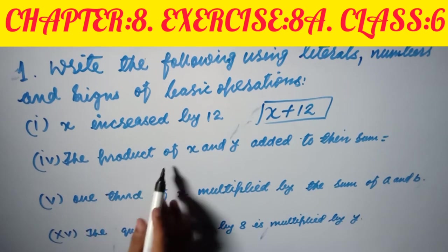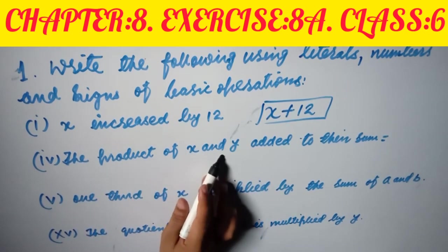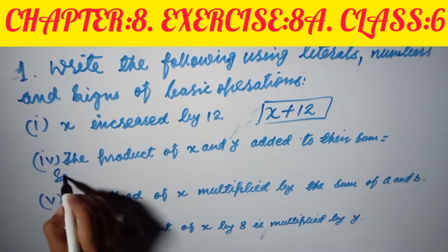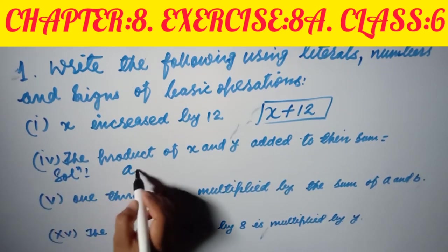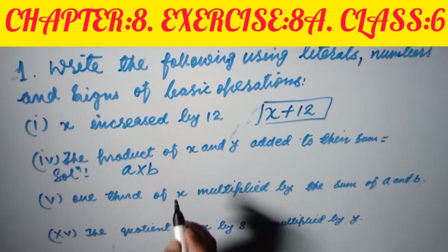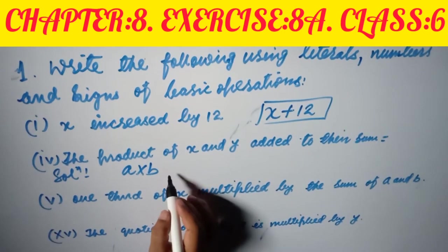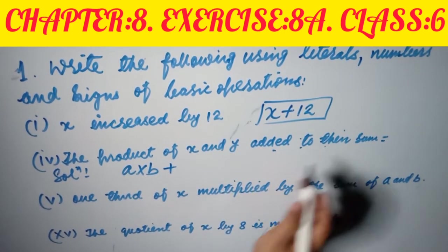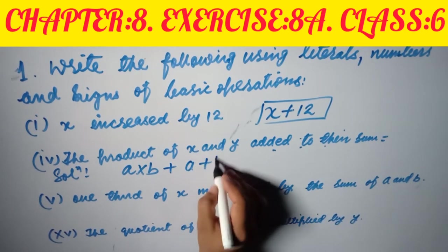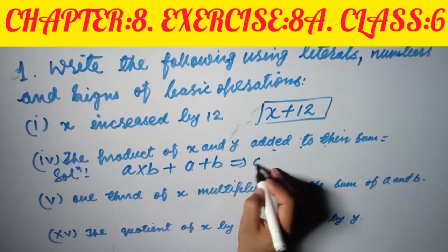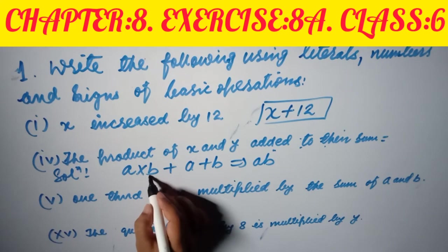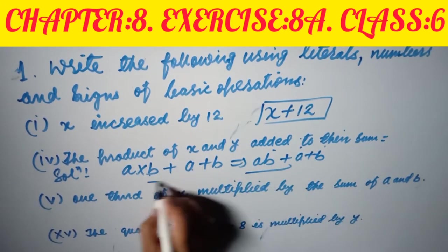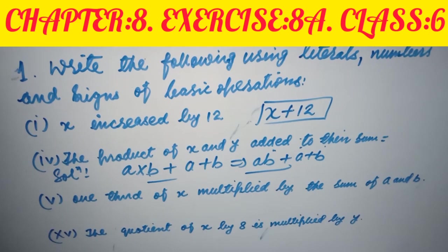Next: the product of x and y added to their sum. Product means multiply — so that's x times y, or xy. Added to their sum means plus a plus b. So the answer is xy plus (a plus b), or ab plus a plus b.